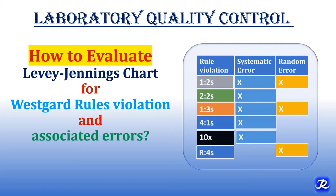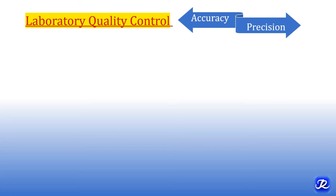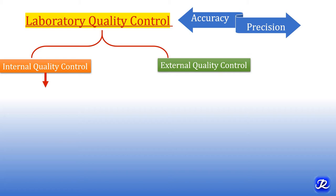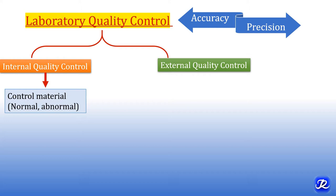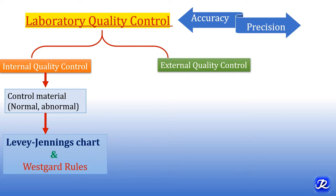In this video, let's learn how to evaluate Levy-Jennings charts for Westgard rule violations and associated errors. Before this, you should first watch the previous three videos on laboratory quality control. Quality control in a clinical laboratory is a statistical process designed to ensure accurate and precise results. Internal quality control is done using quality control material, cross-checking results with known values using Levy-Jennings charts and Westgard rules on a daily basis.